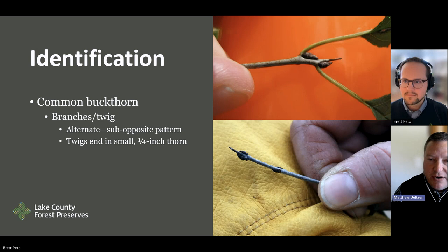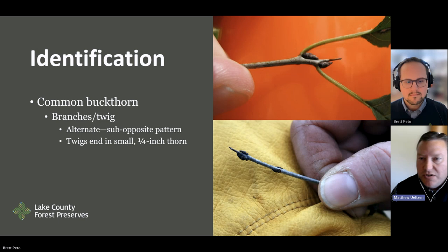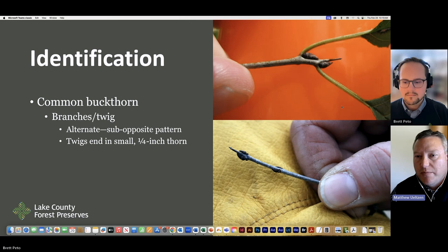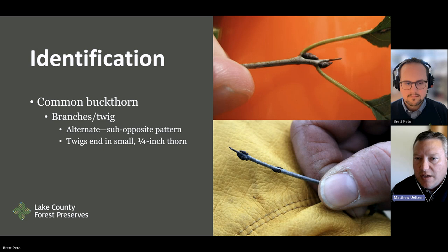Branching patterns can help identify plants. Some plants exhibit opposite branching, where two buds grow off at exactly the same point on opposite sides of the stem. Other plants show alternate branching, where one leaf comes off at one node and another leaf comes off further up the stem going the other direction. Buckthorn is one of the few plants that exhibits both branching patterns — called sub-opposite — which you can see in the photos here showing both alternate and opposite patterns on the same plant.